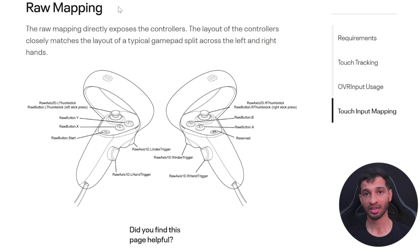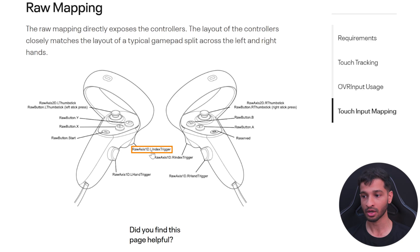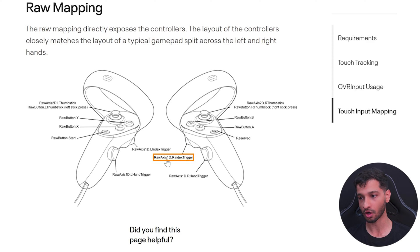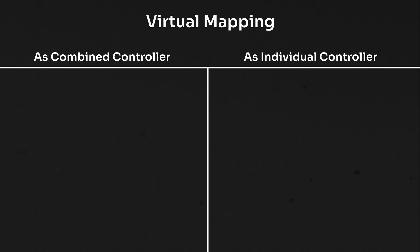The third one is raw mapping, which directly exposes the controller. To register the left trigger you use OVRInput.RawAxis1D.LIndexTrigger, and to access the right controller trigger you use OVRInput.RawAxis1D.RIndexTrigger. So what's the difference between virtual mapping accessed as a combined controller and virtual mapping accessed as an individual controller?